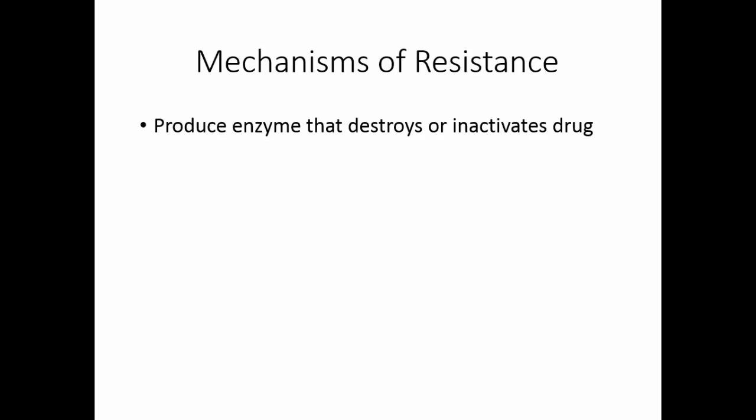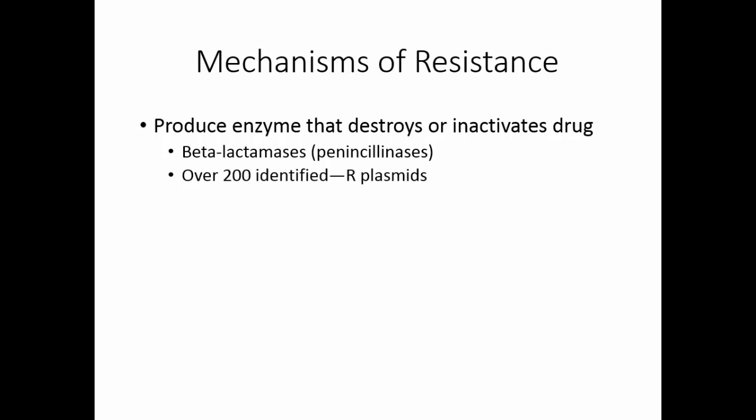One of the ways organisms resist drugs is to produce an enzyme that destroys or inactivates the drug. Beta-lactamases, or penicillinases, have been around for some time, and there are over 200 different penicillinases that have been identified.